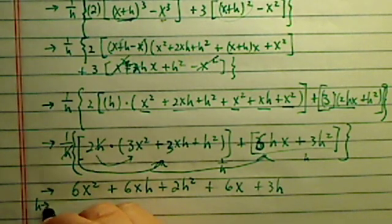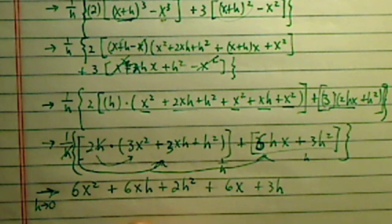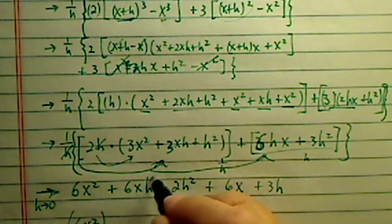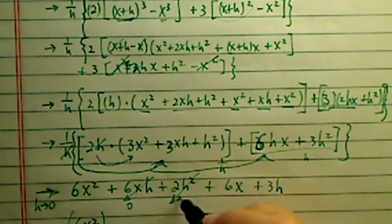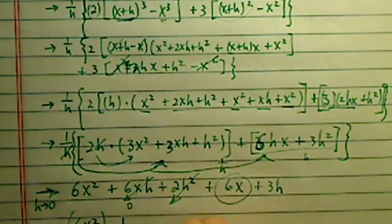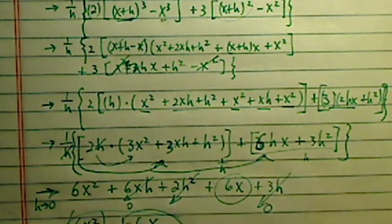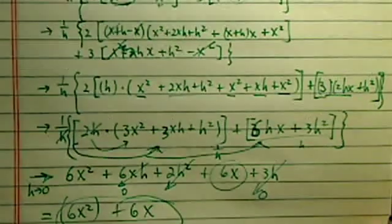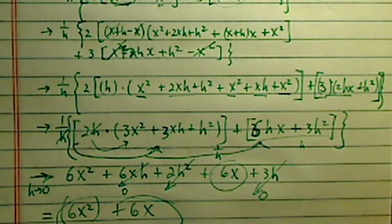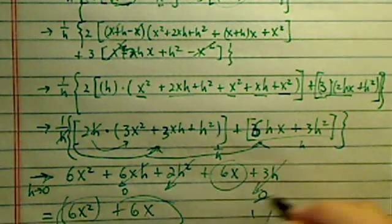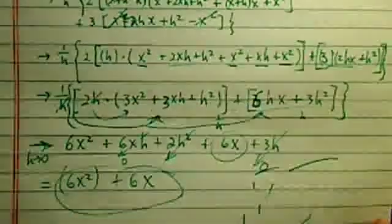Now, this is taking limit as h approaches 0. So, I have 6x squared, saved by itself. This term goes to 0. This one is saved 6x. This one goes to 0. Just like we said, the answer should be 6x squared plus 6x. All right, hope this helped. Have a confident day.